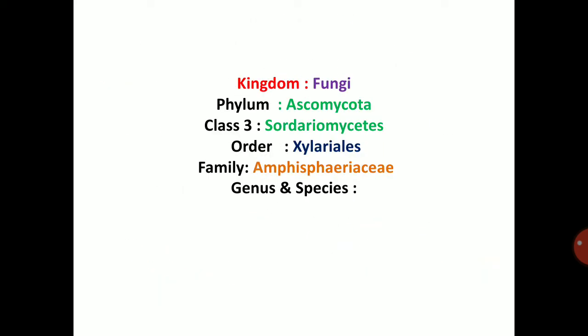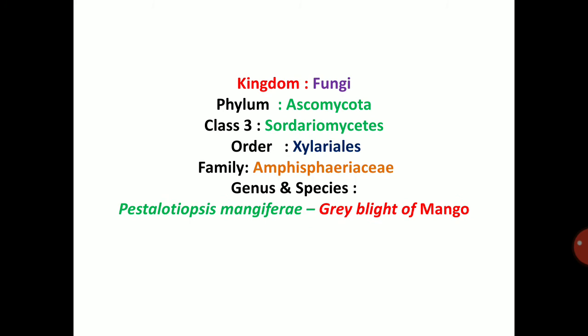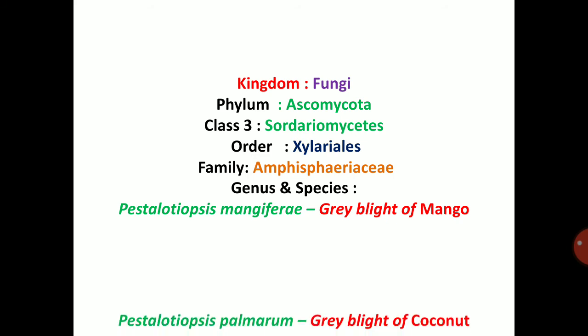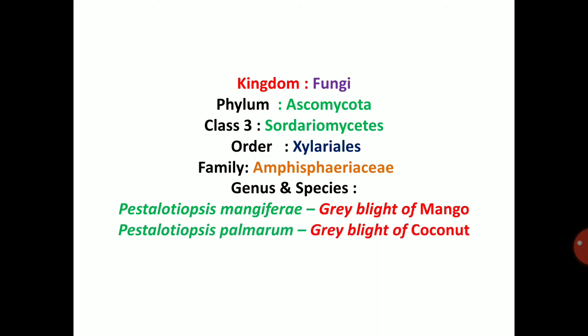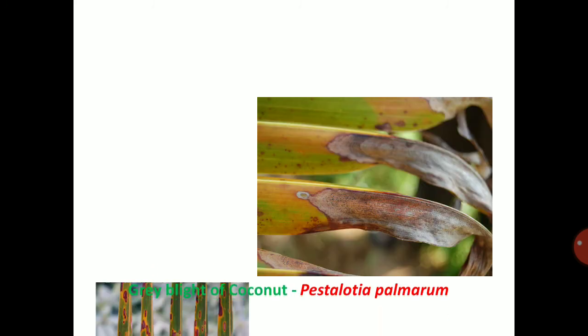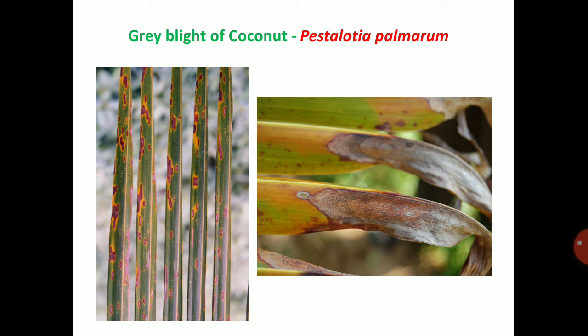This is about Glomerella singulata or Colletotrichum gloeosporioides. The next fungus is Pestalotiopsis. Pestalotiopsis comes under phylum Ascomycota, class Sordariomycetes, order Xylariales, family Amphisphaeriaceae. Genus and species: Pestalotiopsis mangiferae — grey blight of mango; Pestalotiopsis palmarum — grey blight of coconut; Pestalotiopsis theae — grey blight of tea. An important disease of coconut is grey blight of coconut, which produces a grey center and dark margin with yellow halo.